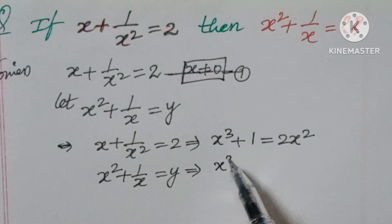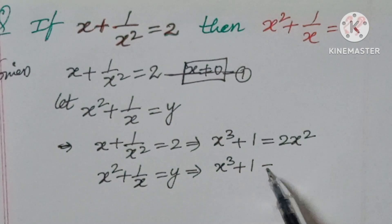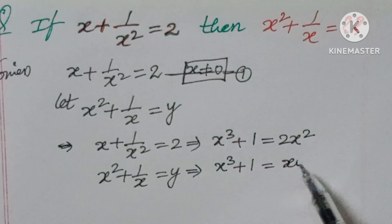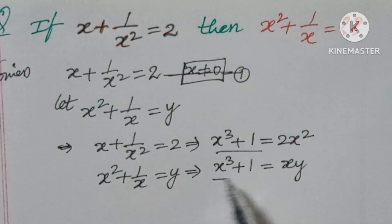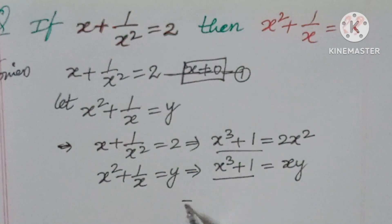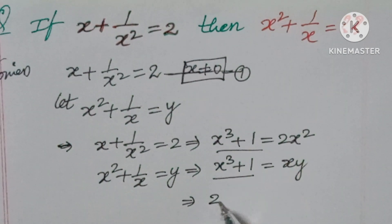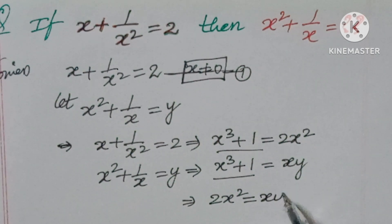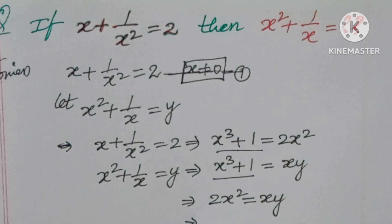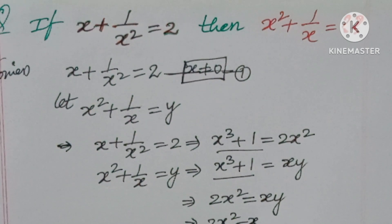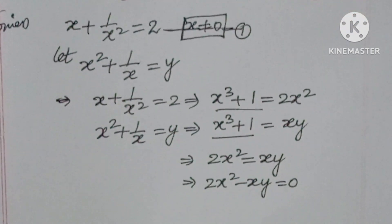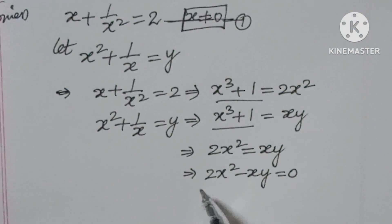From the second equation, x squared plus 1 by x equals y. Taking LCM gives x cubed plus 1 equals xy. Since both left-hand sides equal x cubed plus 1, we equate: 2x squared equals xy, which gives 2x squared minus xy equals 0.